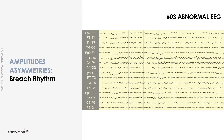Increased amplitude is usually due to a local skull defect. A breech rhythm is an accentuation of EEG amplitude in the region of a skull defect. This results from a decrease in the filtering effect of the skull and affects primarily faster frequencies. It is sometimes misinterpreted as epileptiform activity.